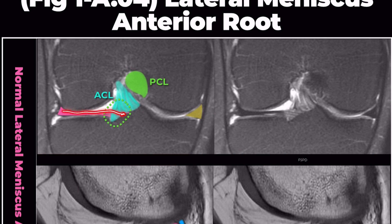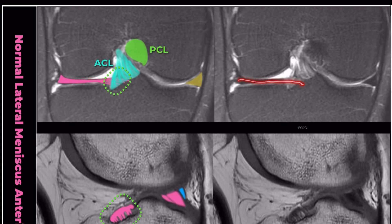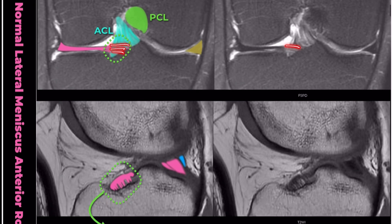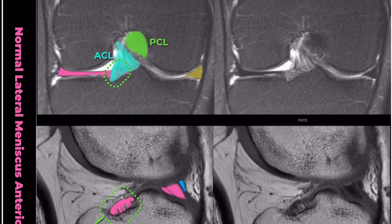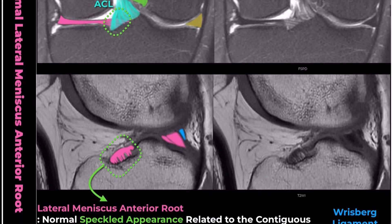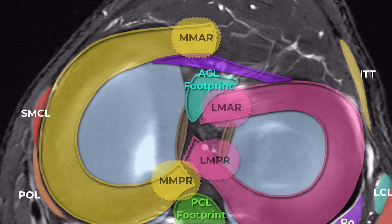The anterior root of the lateral meniscus comprises at least three fiber bundles, forming a fan-like structure. Its fissured appearance on MRI is due to fatty tissue between the collagenous fibers at the insertion point, along with fibers from the ACL insertion. The center footprint of the ACL and the lateral meniscus's anterior root are separated by only 8 mm, and electron microscopy reveals that up to 40% of their fibers overlap.